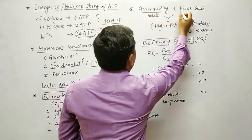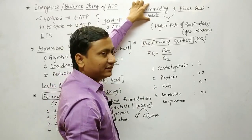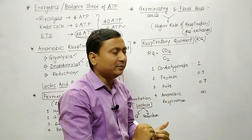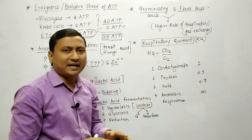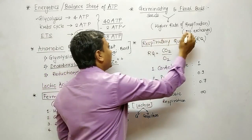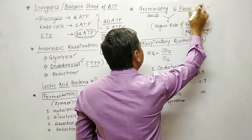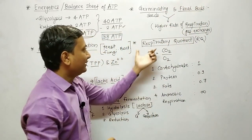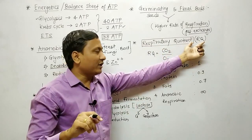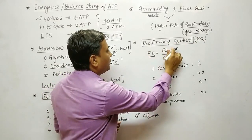Regarding gaseous exchange in plants: germinating seeds and floral buds show a higher rate of gaseous exchange. Study gaseous exchange in plants including roots and stems. Germinating seeds and floral buds are key examples to prepare. The next topic is RQ — Respiratory Quotient.